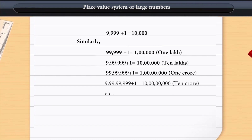9 lakhs 99,999 plus 1 is equal to 10 lakhs. 99 lakhs 99,999 plus 1 is equal to 1 crore. 9 crore 99 lakhs 99,999 plus 1 is equal to 10 crores.